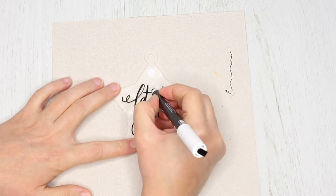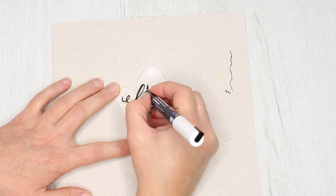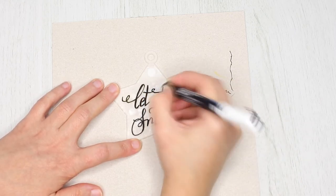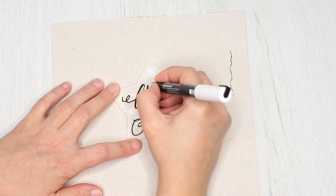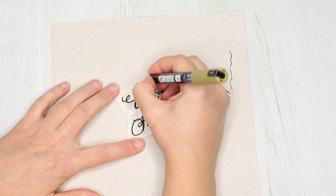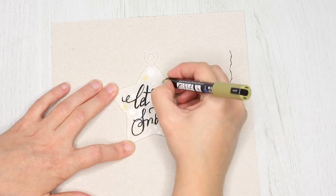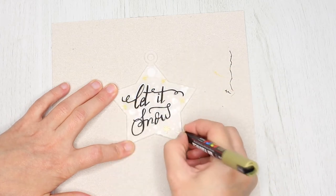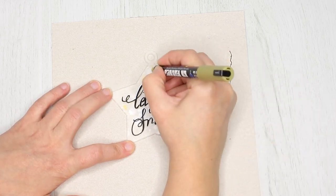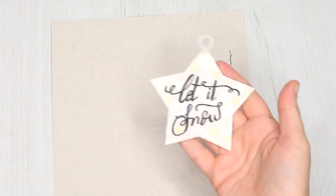Then I decided to add a few white accents as if it's snow on the text, and some golden snowflakes, obviously. Done with this one as well.